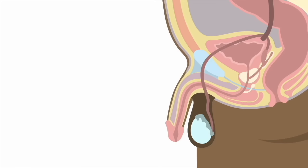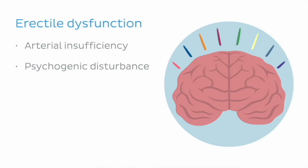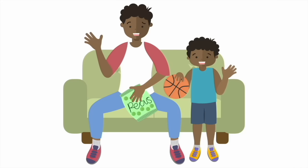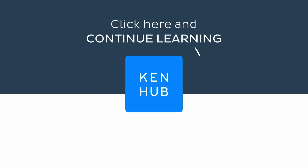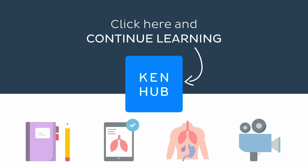To conclude our tutorial, we looked at the clinical condition known as erectile dysfunction. Specifically, we discussed how this inability to achieve an erection is caused primarily by arterial insufficiency to the penis, psychogenic disturbance, and prostatectomy. And that's it! See you next time, and happy studying! Visit kenhub.com where you can read interesting articles, test your knowledge with challenging quizzes, explore our atlas with beautiful anatomical images, or watch more video tutorials like this one.